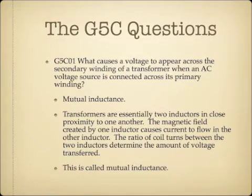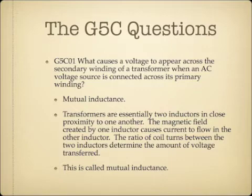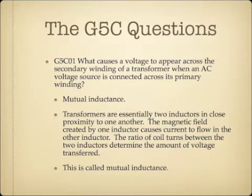What causes a voltage to appear across a secondary winding of a transformer when an AC voltage source is connected across its primary winding? This is called mutual inductance, and this is the heart of how a transformer works. Transformers are essentially two inductors, or two coils of wire, in very close proximity to one another. When AC voltage is applied to the primary coil, it builds up a magnetic field and releases it as the current switches back and forth. This magnetic field bleeds over into the secondary coil, causing it to build up and release a magnetic field, causing current to flow in the secondary winding. The amount of current transferred to the secondary winding is determined by how many coils of wire the secondary winding has compared to the primary. This bleeding over of the magnetic field is called mutual inductance.